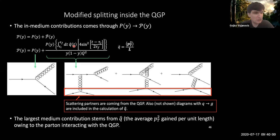So if you ever hear about q hats in any kind of calculations, this is essentially where they come from. So q hat is really the biggest contribution to the medium modifications to the splitting.